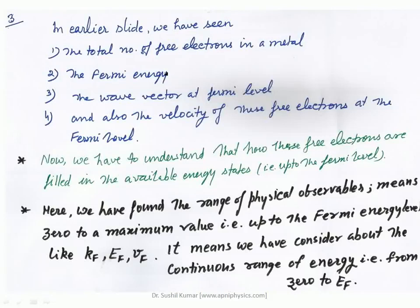In earlier slides, we have seen the total number of free electrons in a matter, the free energy, Fermi energy, the wave vector at Fermi level, and also the velocity of the free electrons at the Fermi level. All these topics we are discussing in the section of free electron theory in metals.